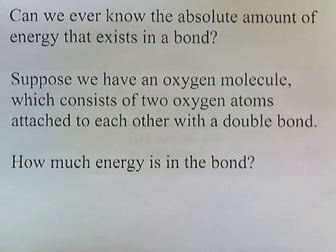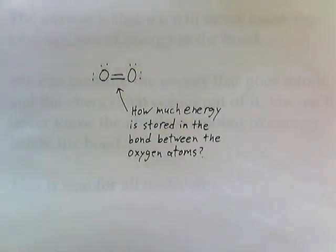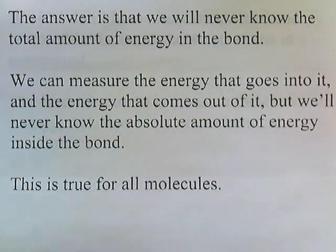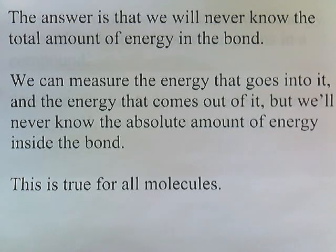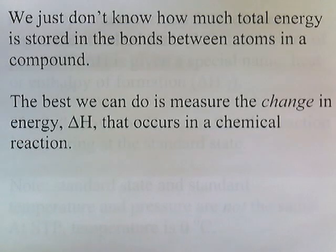Can we ever know the absolute amount of energy that exists in a bond? Suppose we have an oxygen molecule, which consists of two oxygen atoms attached to each other with a double bond — how much energy is in the bond? The answer is that we'll never know the total amount of energy in the bond. We can measure the energy that goes into it and comes out of it, but we'll never know the absolute amount. The best we can do is measure the change in energy, delta H, that occurs in a chemical reaction.